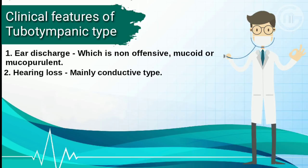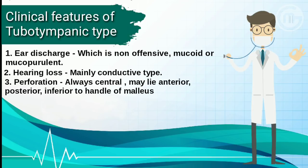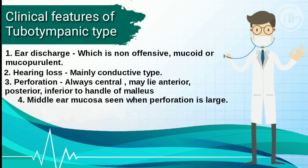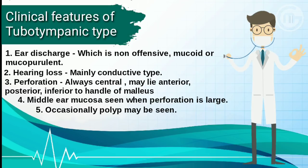Number two, hearing loss, which is mainly conductive type. Number three, perforation, always central, may lie anterior, posterior, or inferior to the handle of malleus. Number four, middle ear mucosa is seen when perforation is really large. Number five, occasionally a polyp may be seen.